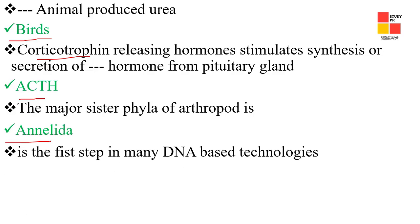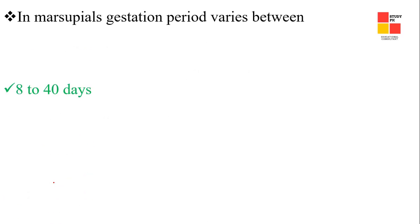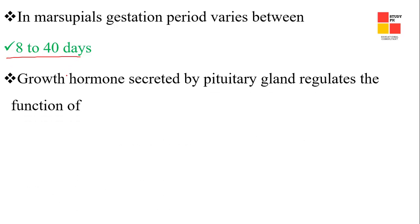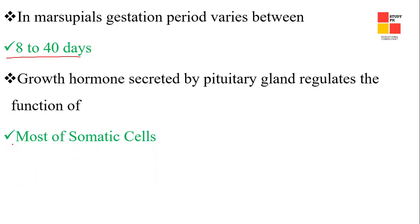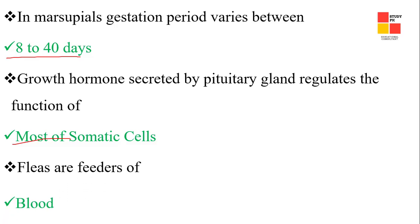Next one: the first step in DNA-based technologies is isolation. Next one: the gestational period varies between 8 to 40 days. Next one: growth hormone secreted by the pituitary regulates the function of most somatic cells.